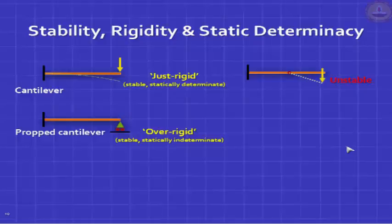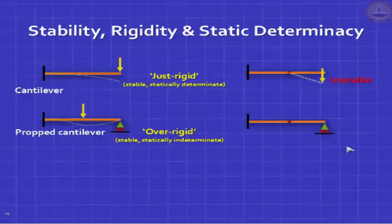In the propped cantilever, we do not know the support reaction by equilibrium alone — we will discover this later. We say the beam is statically indeterminate to the first degree. Now if you put an internal hinge on the propped cantilever, you are bringing a moment release, reducing the rigidity, making it just rigid again. This becomes easy to analyze — you have a child and a parent beam.